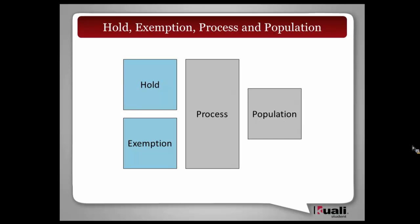We got comfortable saying we know how to define holds and exemptions and how to apply them to people. But then the issue became: how do you actually evaluate and hook that into a business process? For example, when a student goes to their basket and tries to fill it for courses for a particular semester, how do we actually invoke the logic that looks at those holds and checks for an exemption? That's what led us to the idea of a process service. The other theme that kept emerging was the idea of populations, or dynamic people sets.